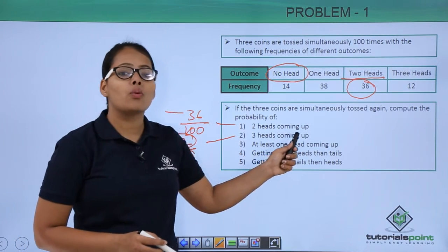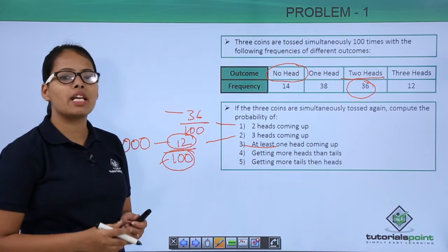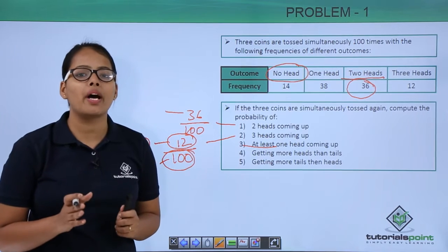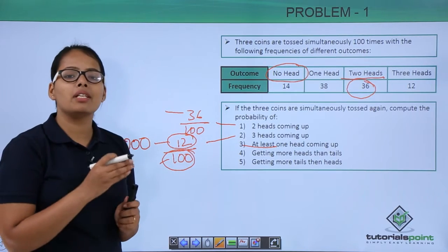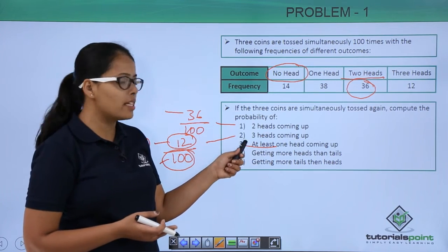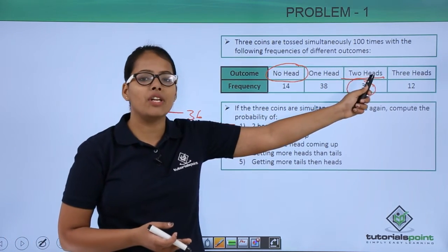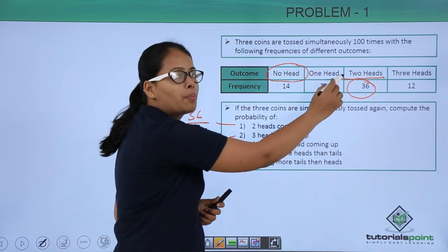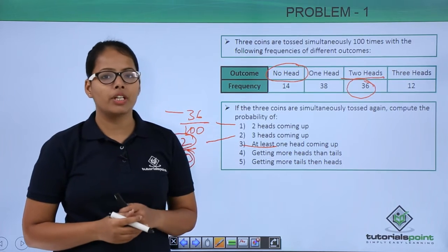Now in the third problem, at least 1 head coming up. You should know the difference between at least and at most. At least 1 means 1 head and then 2, 3 and so on. At most 1 means it should not be more than 1, so it can be 0 and 1. Here the question says at least 1 head, so you will take the case of 1 head, 2 heads and 3 heads: 38 plus 36 plus 12. Sum all these tosses and divide by 100.